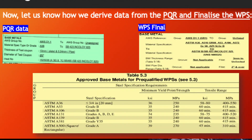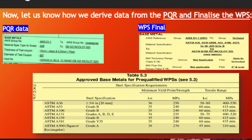Now let us go to the first technical block, which is base metal. On the right side you can see the PQR data, and the final WPS, and at the bottom is table 5.3 where approved base metals for pre-qualified WPS are listed. One of the materials — the structural component — is ASTM A36, which is a pre-qualified material in group 1 of AWS D1.1.